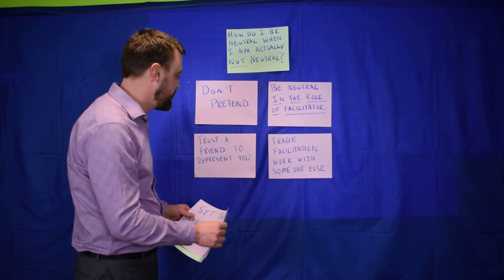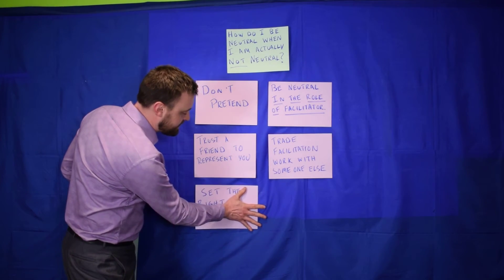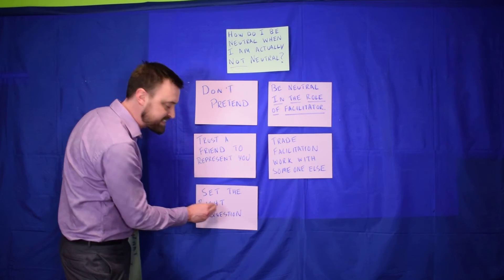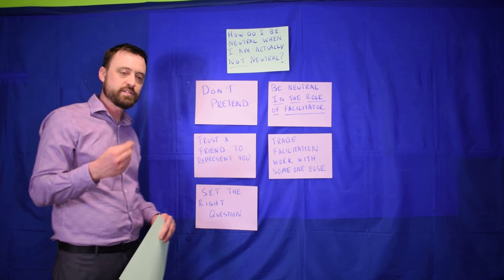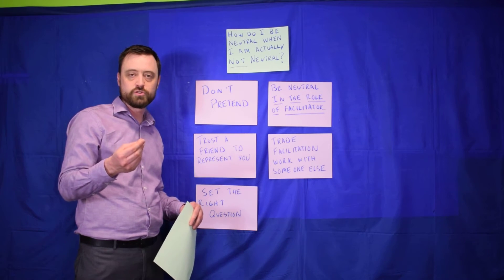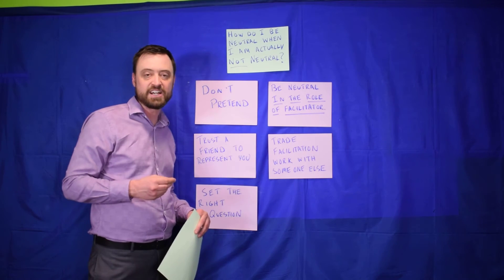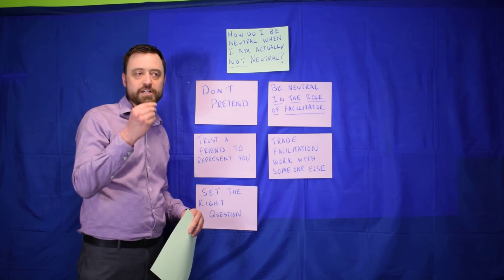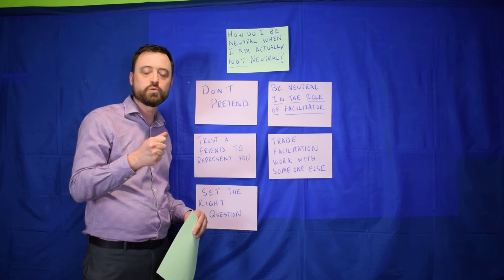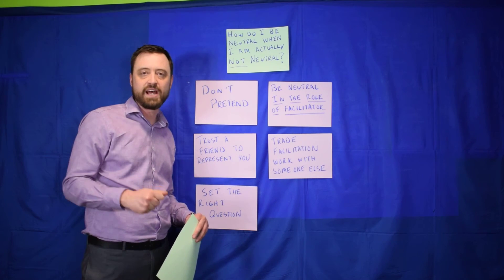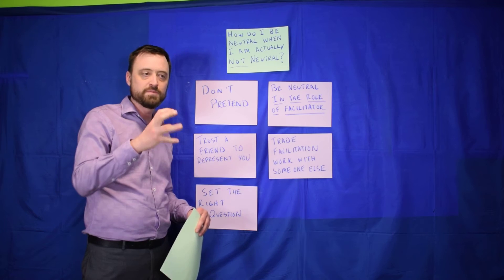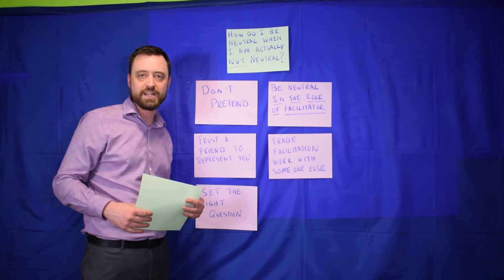One final idea about what you can do to maintain the role as a facilitator is about setting the right question. Because as a facilitator, you're meant to be neutral to the content, but one thing that you need to have some input in is what the question is that's actually being asked. And by choosing the right question, you can choose one that is okay for this group to answer without having your input. Put some limits on it or be clear about what you're actually asking.